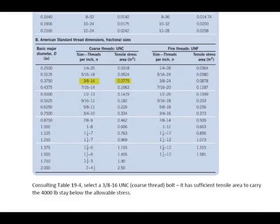So now that we have selected our bolt, we're selecting a 3/8-16 UNC coarse thread bolt, and it has enough tensile area to carry the 4,000 pounds below that allowable stress level.